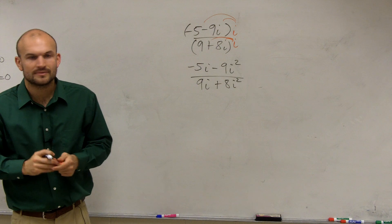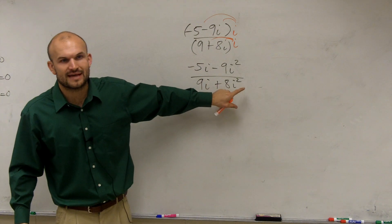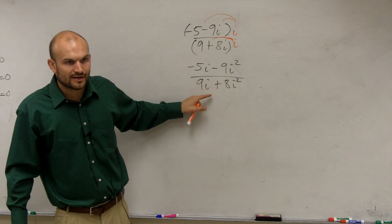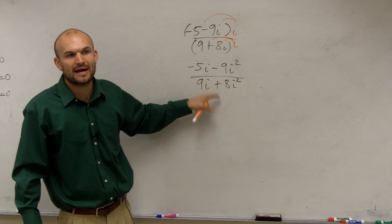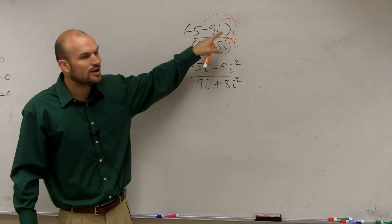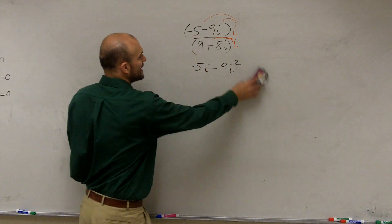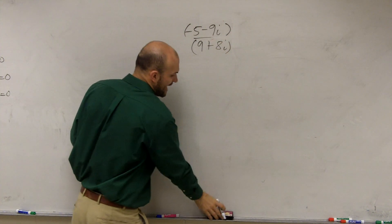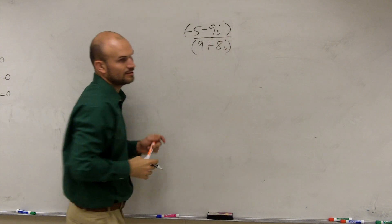Now, here comes the problem. We know i squared gets rid of the i because it turns to negative 1. But then we still have an i over here. So no matter how many times we multiply by i, we have to apply distributive property. We're never actually going to get rid of it. So when you have a binomial as your denominator, you cannot just multiply by i like we did when it was a monomial, right?